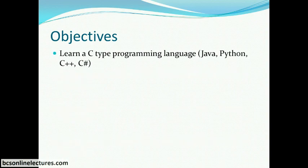Now let's see what the objectives of learning this software development subject are. The first objective is you need to learn a C-type programming language — in this case we will learn Python — because every IT professional needs to learn at least one programming language. Programming language is a basic foundation of software system development, so you need to learn at least one programming language, and in this case we will learn Python.